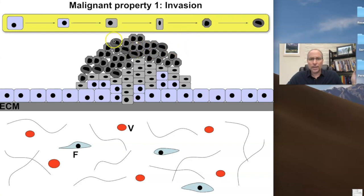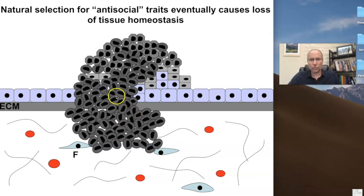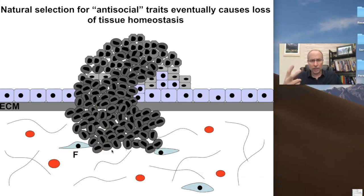Benign tumors just grow. But one of their descendants changes in some way to gain the ability to invade. To invade, the cell has to get through the extracellular matrix and into the tissue beneath it. There's no tissue above, so it has to eat away at that ECM and work its way down into the tissue beneath. When it does that, we have a full-blown cancer. The cells begin to invade these tissues — they literally chew their way through the ECM. That is the first of the two malignant properties.